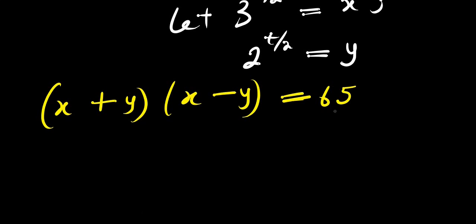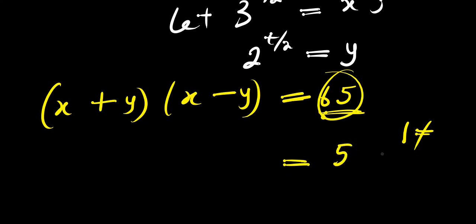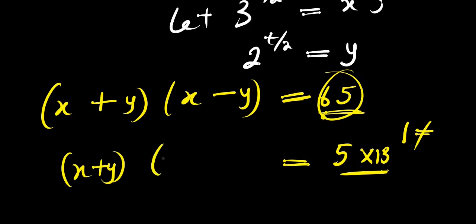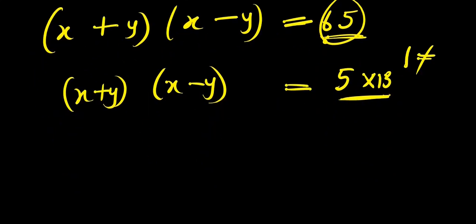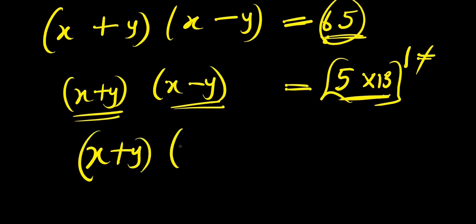Now we make use of two prime numbers that multiply to give 65. Remember, 1 is not a prime factor. The two prime factors we have are 5 and 13, since 5 times 13 equals 65. So we have (x plus y)(x minus y) equals 5 times 13. Since x plus y is greater than x minus y, we rearrange to (x plus y)(x minus y) equals 13 times 5.